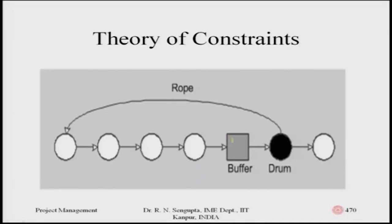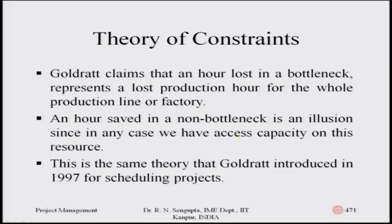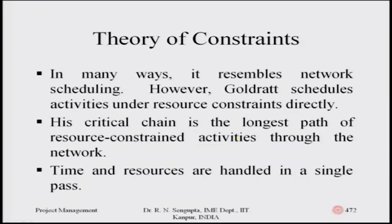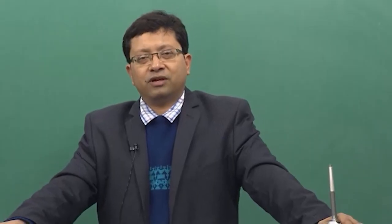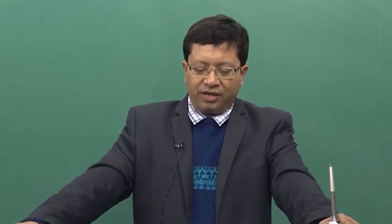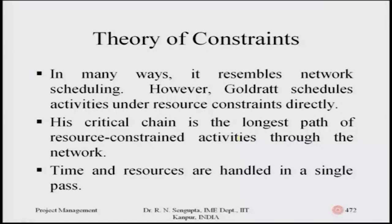The drum-buffer-rope concept: the yellow highlighted buffer has a consequence on the drum and how feedback happens. Goldratt's critical chain resembles network scheduling — it is the longest chain of resource-constrained activities throughout the network. Time and resources are handled in a single pass, making it a practical improvement over traditional PERT and CPM approaches.